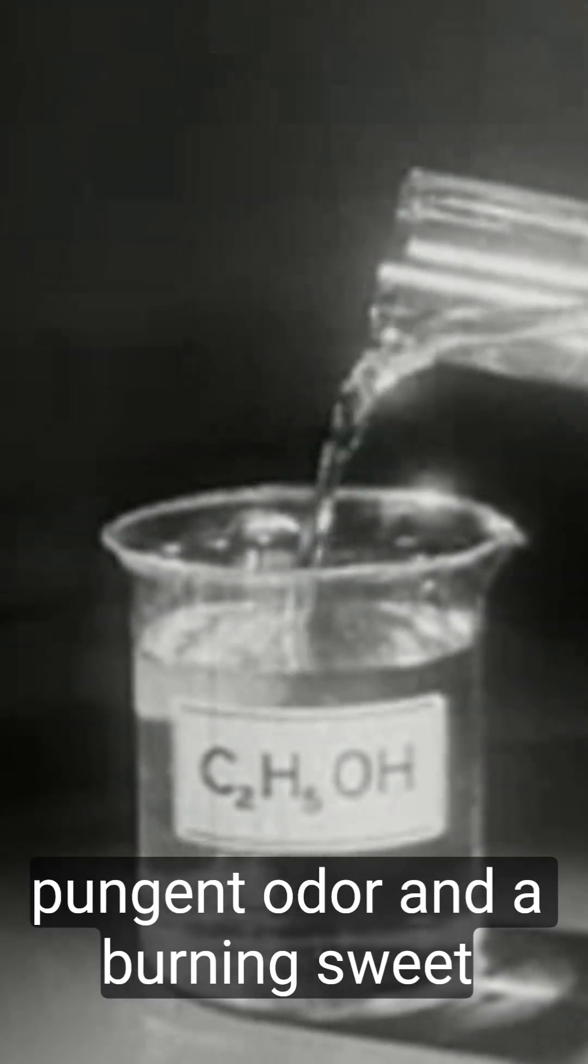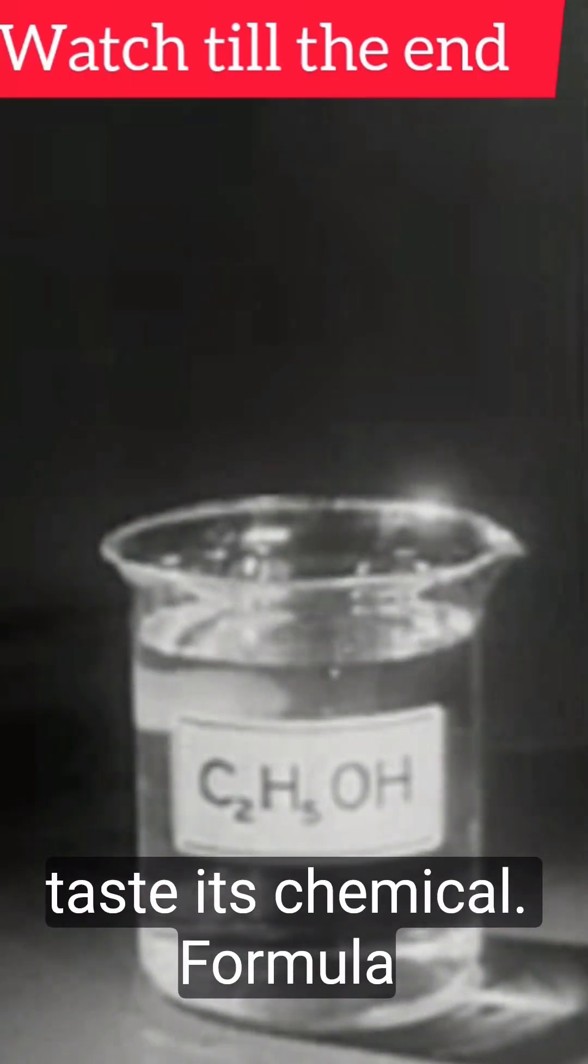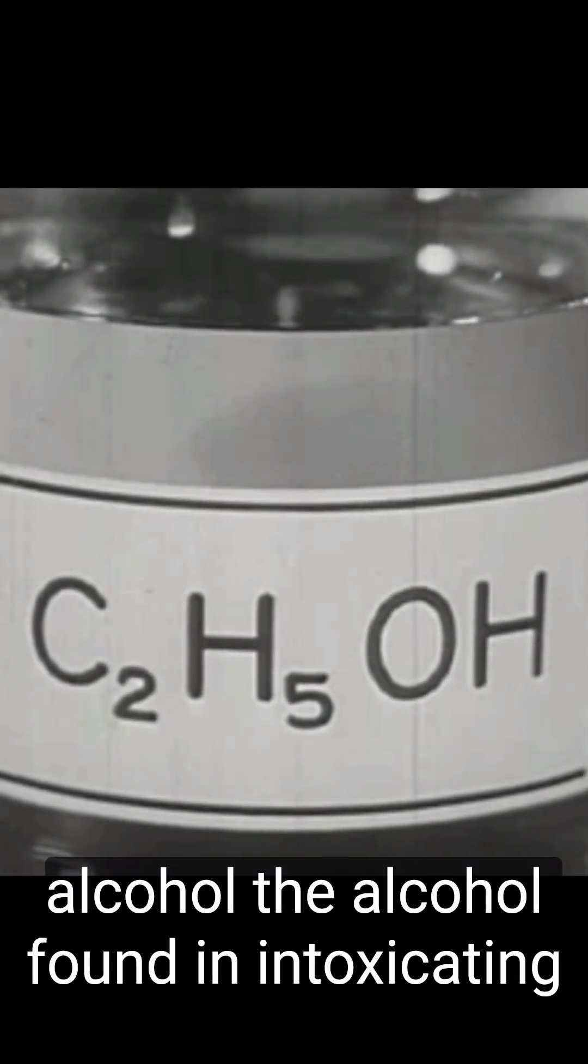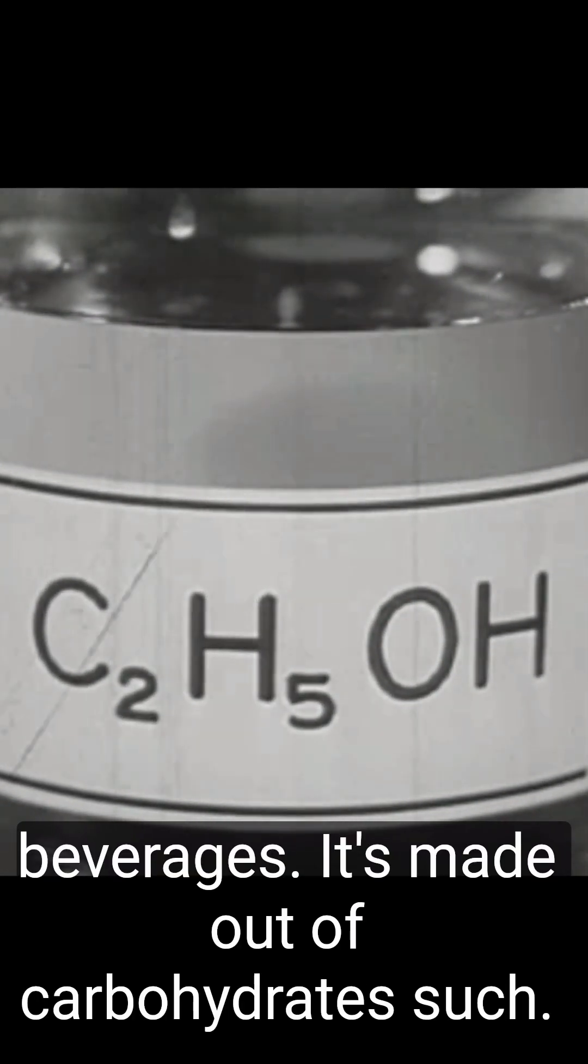Alcohol is a colorless liquid that looks like water. It has a pungent odor and a burning, sweet taste. Its chemical formula is C2H5OH - this is ethyl alcohol, the alcohol found in intoxicating beverages. It's made from carbohydrates.